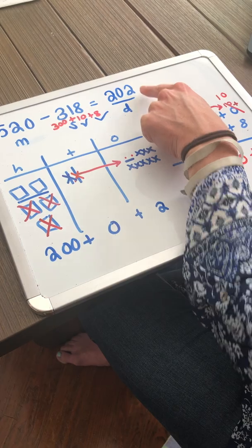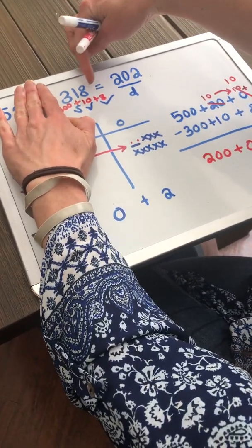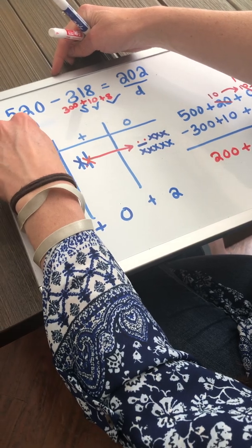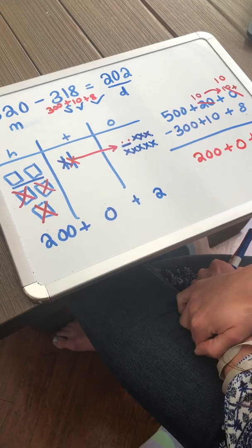I can check my work by adding 202 and 318 and I should get 520. Today you're going to practice regrouping with drawings or expanded form.